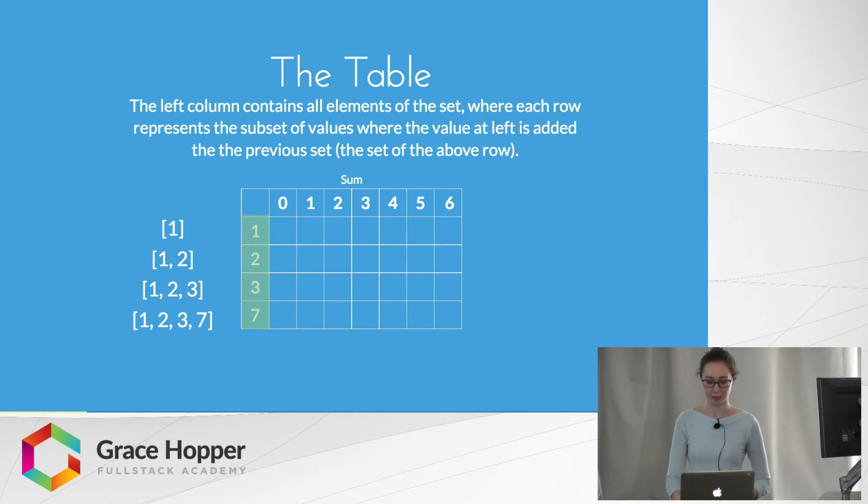This just means, for example, if we're on the row that has 3, our set would include 3 plus the 2 values above it. So in this case, that would be the set {1, 2, 3}, which I've indicated at left.